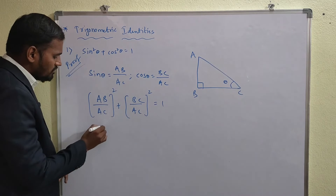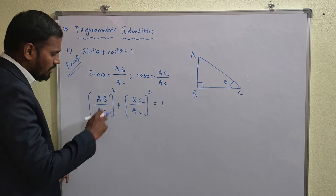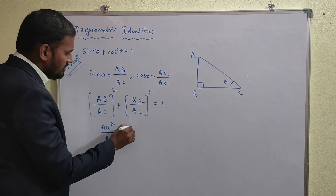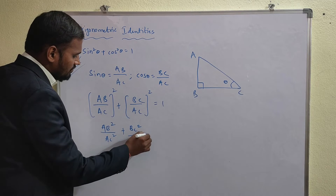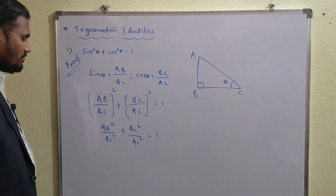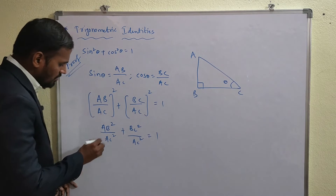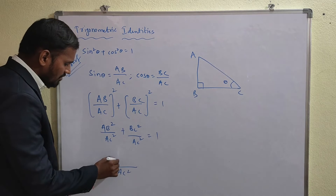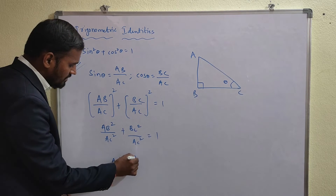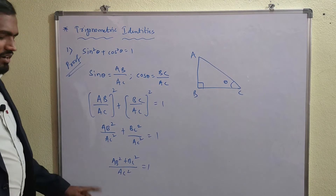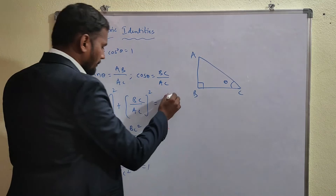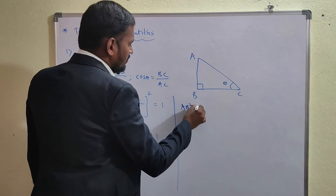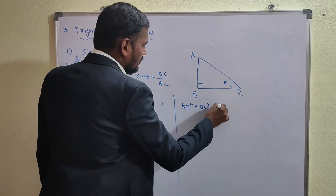Applying the square to numerator and denominator: AB²/AC² + BC²/AC² = 1. Taking LCM as AC²: (AB² + BC²)/AC² = 1.